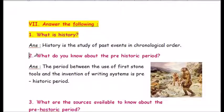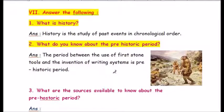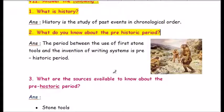Question two: what do you know about the prehistoric period? The period between the use of first stone tools and the invention of writing system is prehistory. Prehistory begins with the appearance of human beings about five million years ago and ends with the invention of writing around 6,000 years ago. It is divided into three stages: the Paleolithic age, Neolithic age, and the metal age.